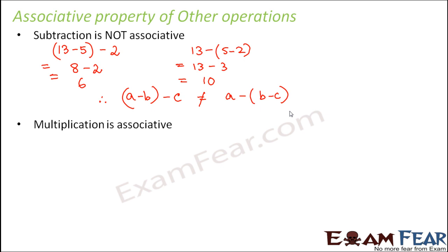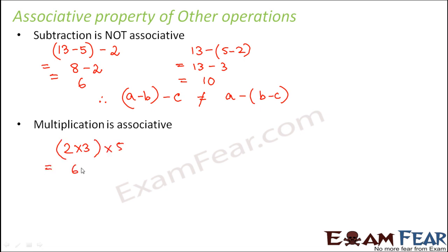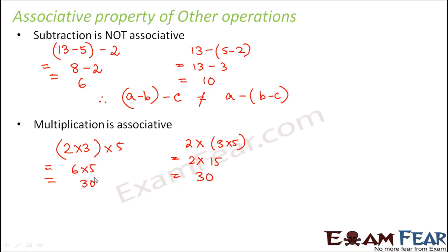Let us talk about multiplication. In multiplication, we see that it is associative. For example, (2 into 3) into 5: 6 into 5 equals 30. Now performing the same as 2 into (3 into 5): 3 into 5 is 15, so 2 into 15 is 30. We get the same result in both cases.